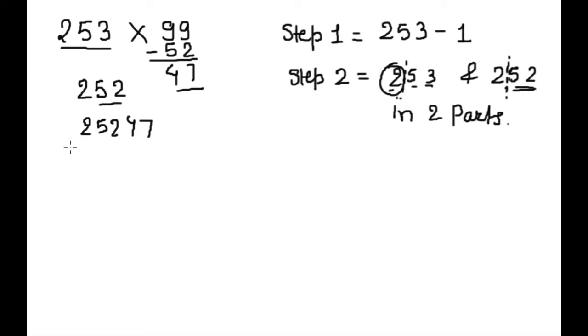Again we will divide this 25247 in 2 parts like this or after 2 digit. And this 2 we will subtract from here and we will write 0, 2 minus 2 is 0, 52. This is our answer.